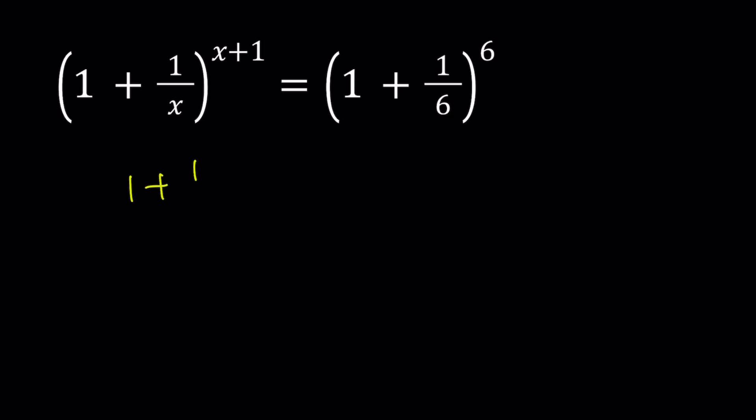1 plus 1 over x to the power x equals 1 plus 1 over 6 to the power 6. And you're like, come on, this is way too easy, right? Obviously x equals 6. You can directly correspond, 1 to 1 correspondence. Great. We still have to look for other solutions if there are any, but this would be super duper simple.